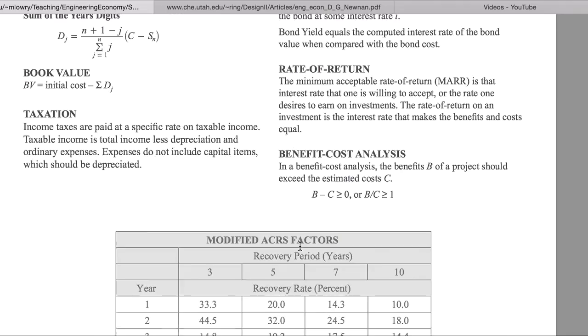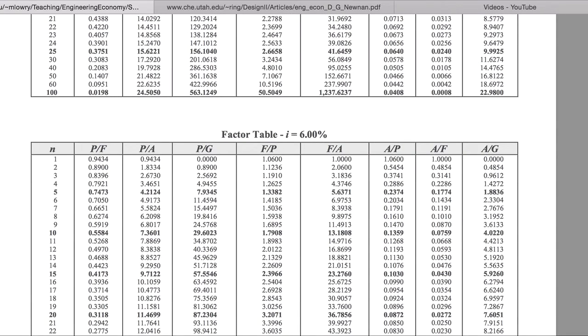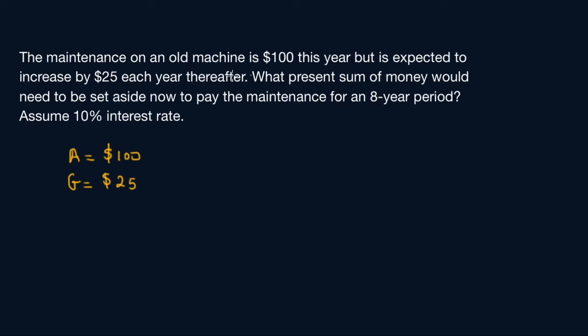Now we have to bring everything to present worth, and i is 10%. To bring the annual amount to P, remember we know A and we need P, we need a present value. So that's P given A, and in order to cancel it out you multiply by A. So you have A, i, and n.